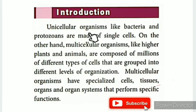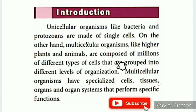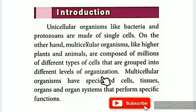Unicellular organisms like bacteria and protozoans are made of single cells. On the other hand, multicellular organisms like higher plants and animals are composed of millions of different types of cells that are grouped into different levels of organization.